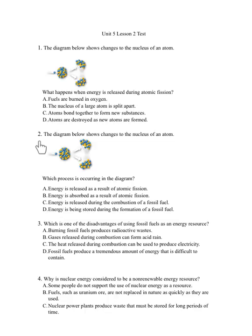Number 2. The diagram below shows changes in the nucleus of an atom. Which process is occurring in the diagram? A. Energy is released as the result of atomic fission. B. Energy is absorbed as the result of atomic fission. C. Energy is released during the combustion of a fossil fuel. D. Energy is being stored during the formation of a fossil fuel.